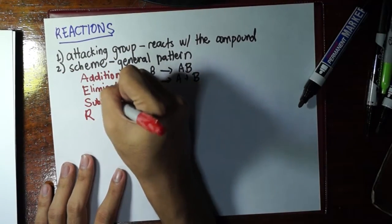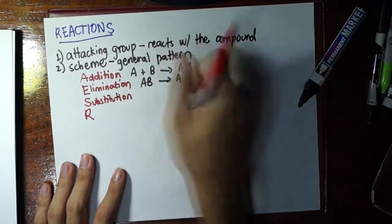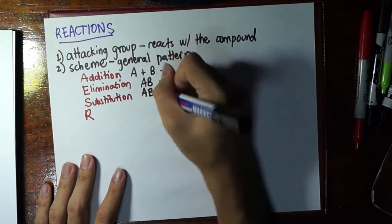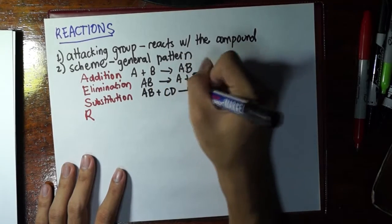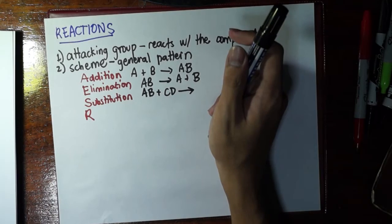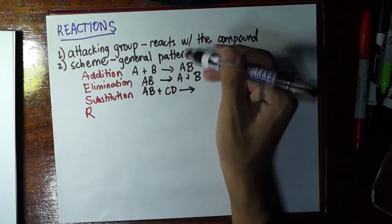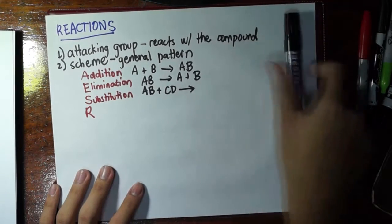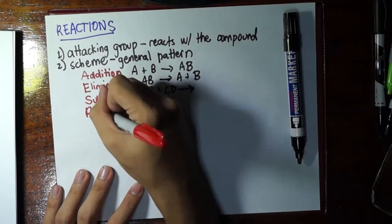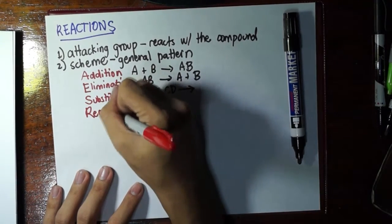The second is elimination, AB goes to A plus B. The third is substitution. Substitution here is just like displacement, but it's always double displacement. Because if in general chemistry you recall, one of those in single displacement is an ion. Remember in organic chemistry, we rarely encounter ions. Maybe we encounter them as reagents, but not as the compound of interest.